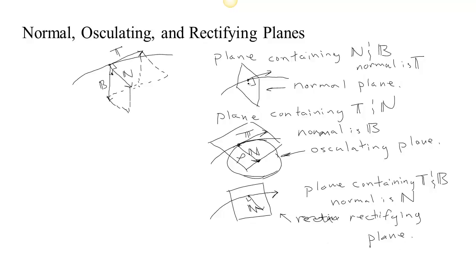So we have these three planes: the normal plane, through which the curve breaks perpendicularly, and its normal is actually the unit tangent T. The one whose normal is the unit normal N — that's the one that contains T and B — is the rectifying plane. And the one that contains T and N is the one that contains the osculating circle, so it's the osculating plane.